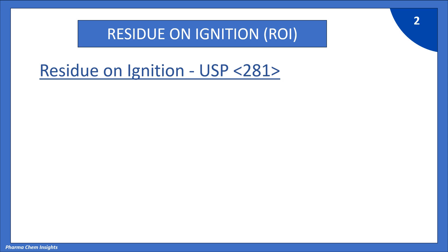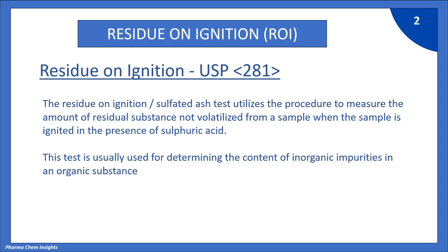Residue on Ignition — USP Chapter 281. The Residue on Ignition or sulfated ash test utilizes a procedure to measure the amount of residual substance not volatilized from a sample when the sample is ignited in the presence of sulfuric acid. This test is usually used for determining the content of inorganic impurities in an organic substance.